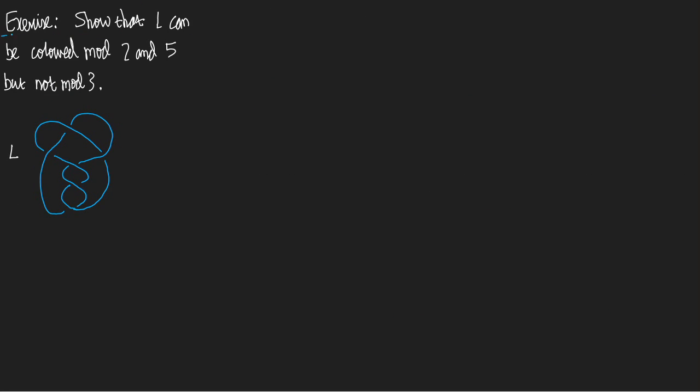Exercise. Show that the link L down here can be coloured mod 2 and 5, but not mod 3.